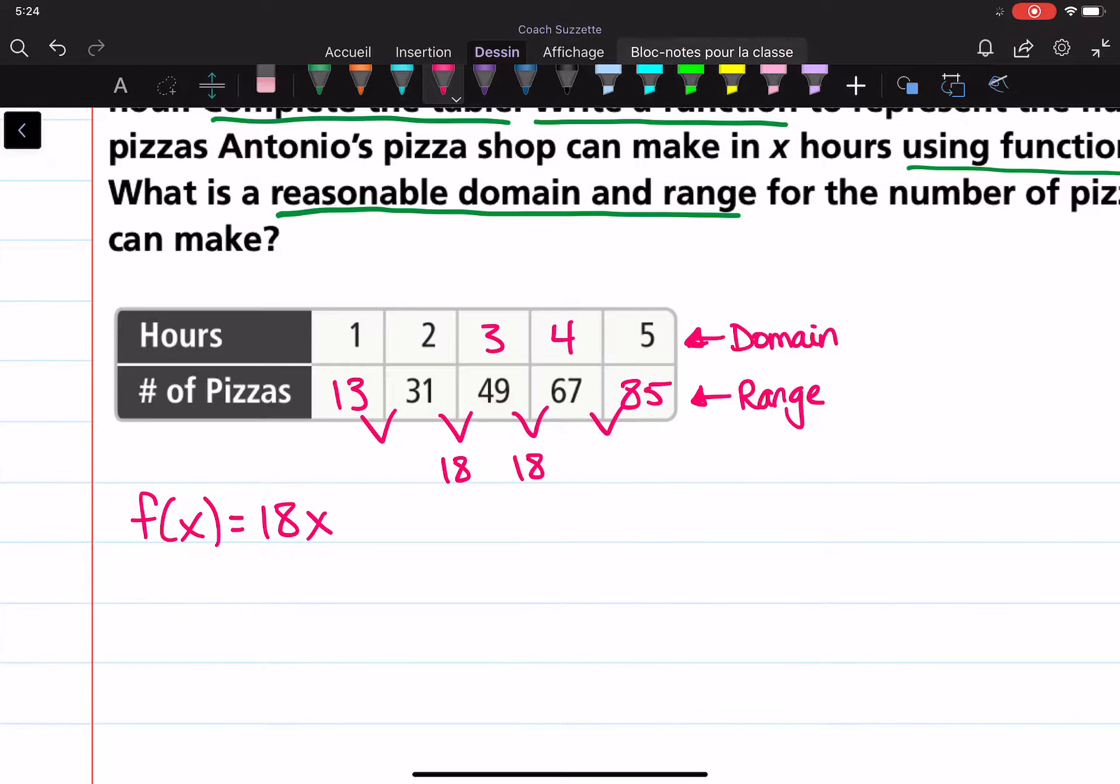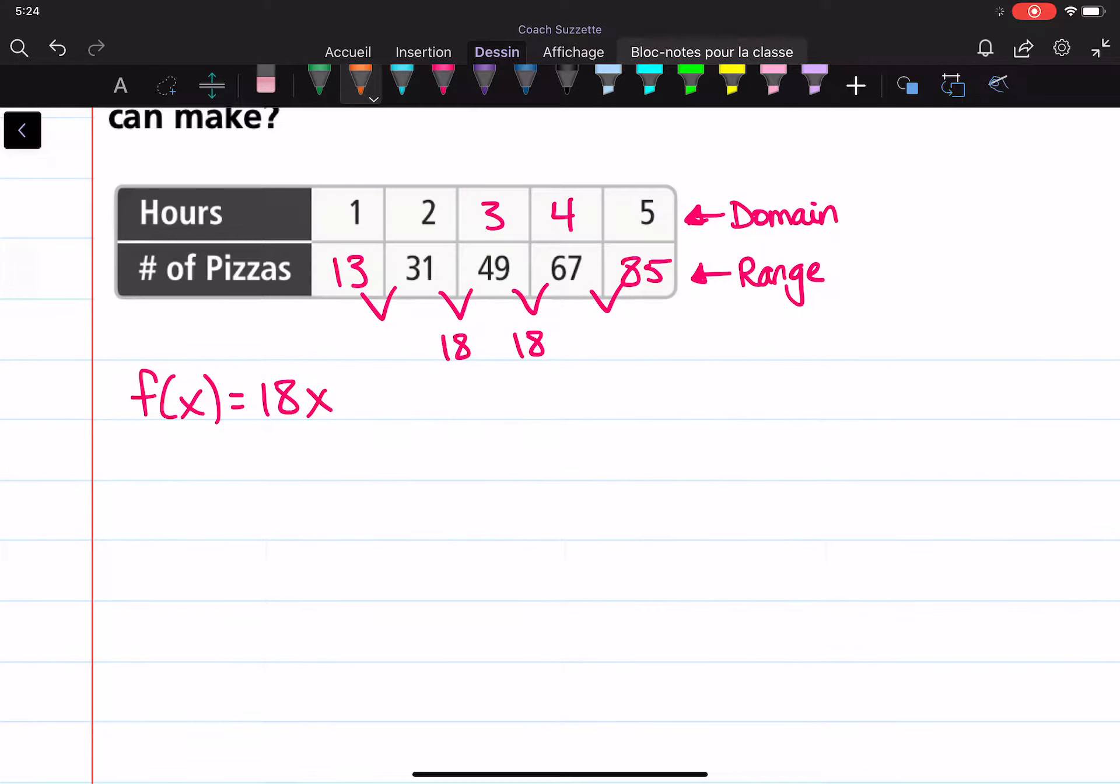What about the y-intercept? The y-intercept is when x is equal to zero. When x is equal to zero. So let's use y equals mx plus b, substitute for this, this, and this, and find b.